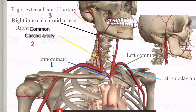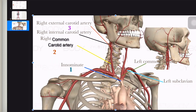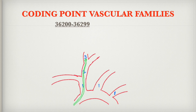From the arch of the aorta, three branches are arising: innominate, left common carotid artery, and left subclavian. These are the first-order branches. From innominate, the right common carotid artery arises as a second-order branch. From the second-order branch, two more branches arise — the right external carotid artery and right internal carotid artery — which are third-order branches.